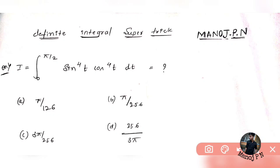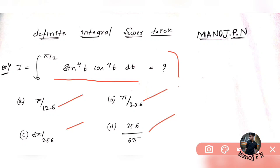So here we go, the first trick is going to be on the definite integral, and the second trick is going to be something on the derivative. So let's look at the second one later. This is the first one. The question: I is equal to integral 0 to pi by 2, sin to the power 4t, cos to the power 4t into dt is equal to what, and I am given with 4 options.